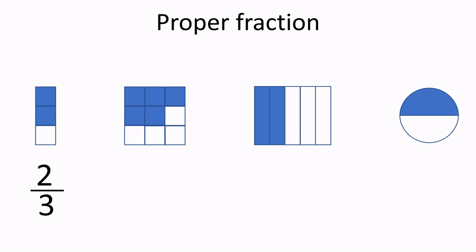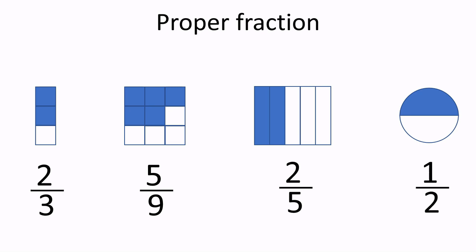Next, we have five squares shaded out of a total of nine squares. So, we will write it as five out of nine. And here, we have two rectangles shaded out of five, so we will write two as the numerator and five as the denominator. Finally, we have one half of a circle shaded, so we will write one as the numerator and two as the denominator.